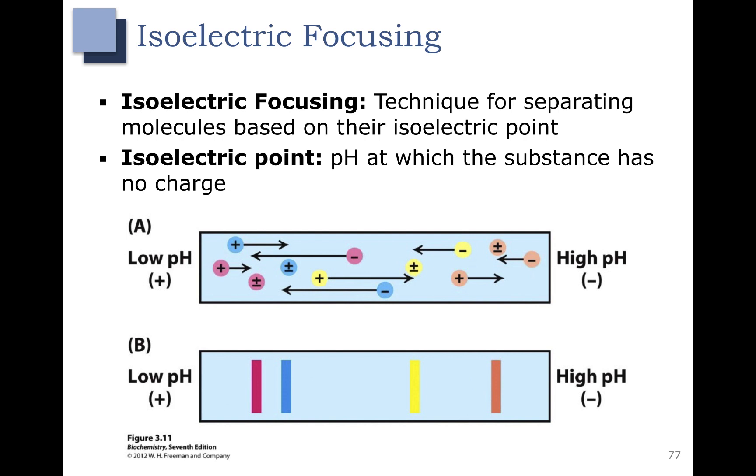Isoelectric focusing is specifically for separating molecules based on their isoelectric point. This means amino acids. All amino acids have an isoelectric point, or a pH at which the substance has no charge. Let's take a look at an example.